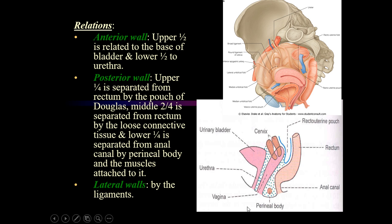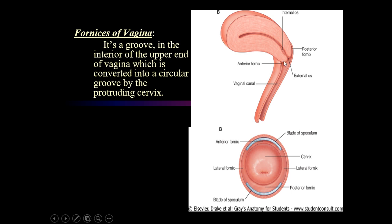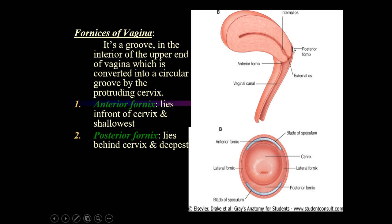Apart from the walls, there are the fornices. A part of the cervix projects slightly into the vaginal cavity, creating spaces between the cervix and the walls. The space between the anterior wall and the cervix is called the anterior fornix — a groove at the upper end of the vagina converted into a circular groove by the protruding cervix. Similarly, behind the cervix is the posterior fornix, between the posterior wall of the vagina and the cervix.